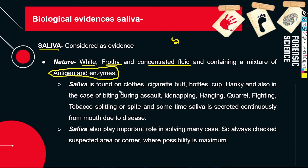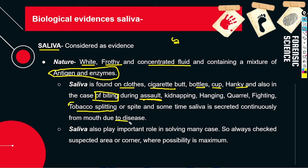Saliva can be found on clothes, cigarette butts, bottles, and in biting cases. If there is assault, kidnapping, or hanging, and if there are bite marks, then saliva can be found there. It can also be found in cases involving fighting, tobacco spitting — the tobacco that we eat will be found in parts, and there will also be saliva. Sometimes there are diseases that continuously secrete saliva. Saliva plays a very important role in solving many cases.